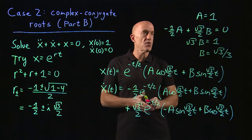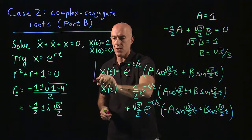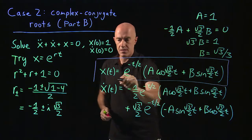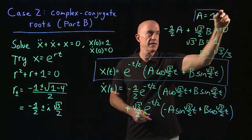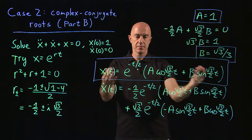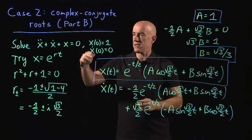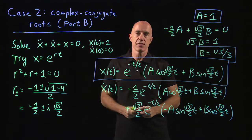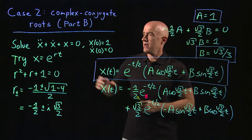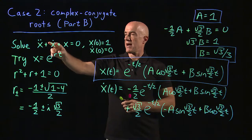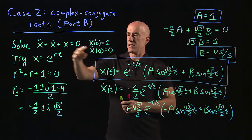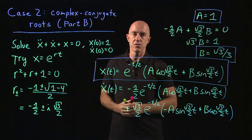So what is our solution? Our solution for x is given by the general solution expression, and we've determined a equals one and b equals root 3 over 3. That's the solution to the differential equation with the initial conditions. To summarize: we're solving x double dot plus x dot plus x equals zero, looking for the solution satisfying these two initial conditions.